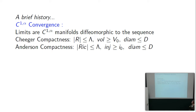There's also Anderson's compactness theorem: if the Ricci curvature is bounded on two sides, the injectivity radius is bounded below, and the diameter is bounded above, then a subsequence converges in the C1-alpha sense. C1-alpha convergence means you have a C1-alpha map from one manifold to the other, it pulls back the metric tensor onto the limit space, and the metric tensors converge in the C1-alpha sense.